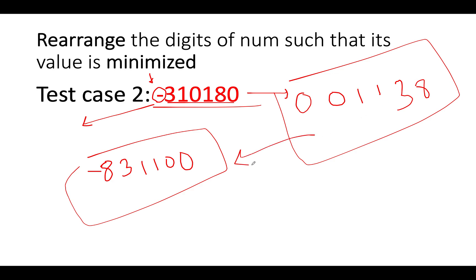So when we reverse this up, what do we get? We get 8, 3, double 1, double 0. And now we can cast this into number format and add a negative sign to it because previously we stored this information that the number was negative in nature. So these are the two test cases that you need to cover in this algo and the interviewer might not tell you these test cases directly.